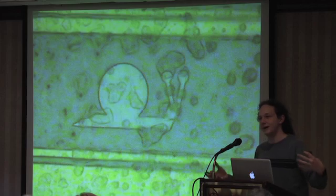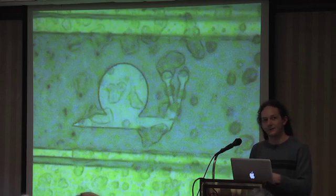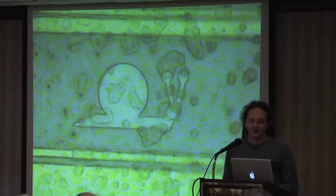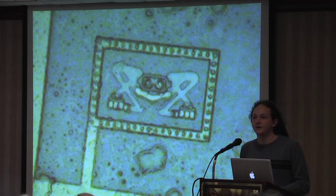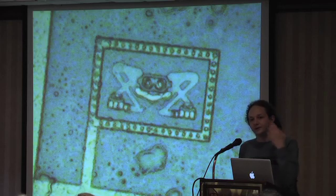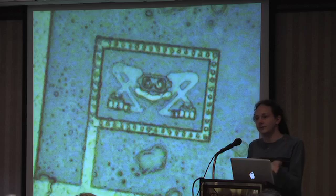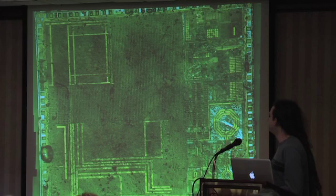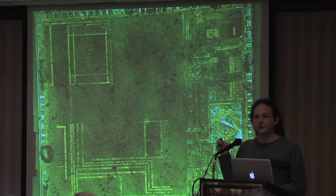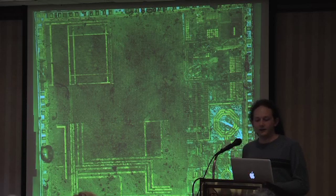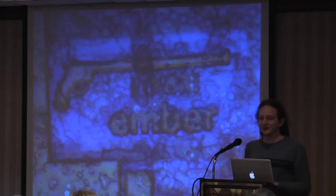From this frog you can tell that the chip was made by ST Microelectronics, because these same markings that function as harmless art can also be used to identify chips which do not have identification tags in them. This is the Ember EM357 chip that they recently came out with to replace their 200 series. The first thing that you think of with '357' is a .357 Magnum.